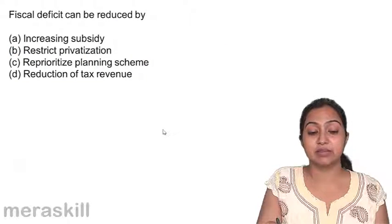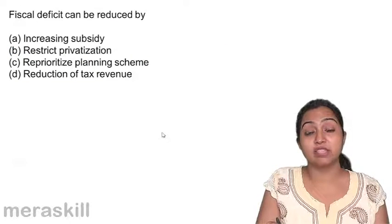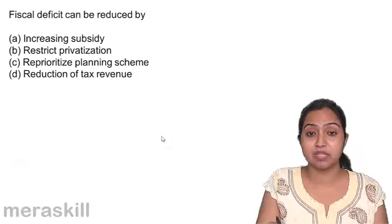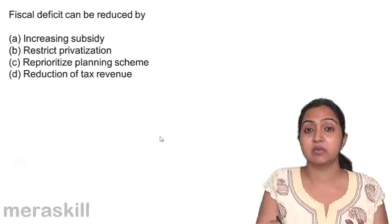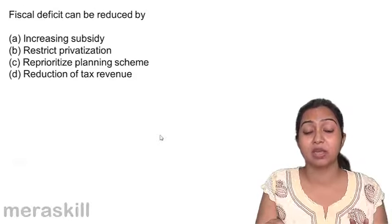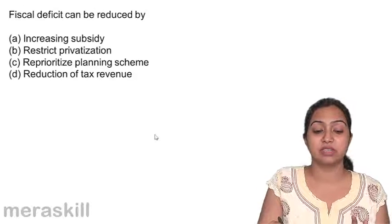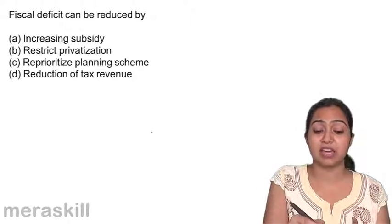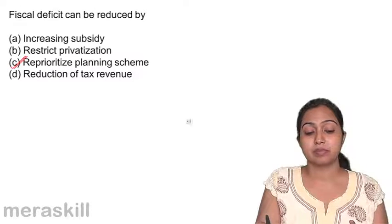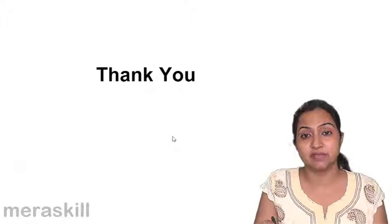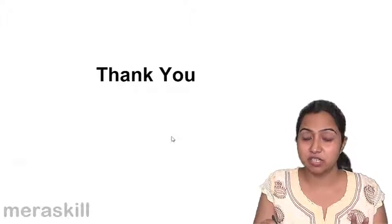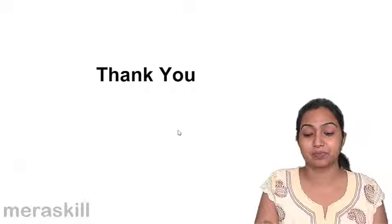Fiscal deficit can be reduced when there is too much deficit. How can you reduce it? Increasing subsidy? No. District privatization? No. Reprioritize planning schemes — you need to plan well and spend in a more planned way. That is how you can reduce fiscal deficit. With this, we come to the end of budget and fiscal deficit. Hope you have understood the concept well. Thank you.